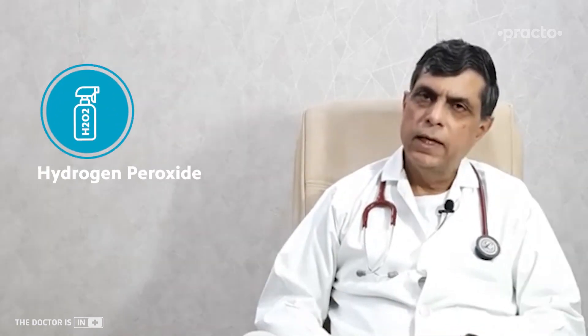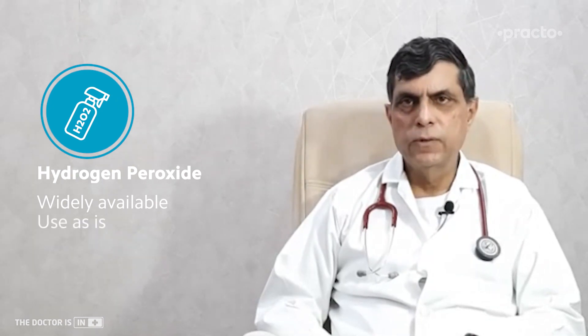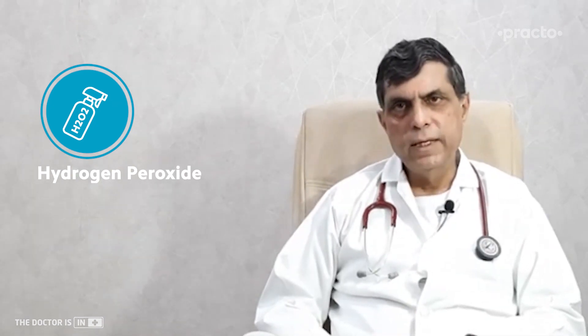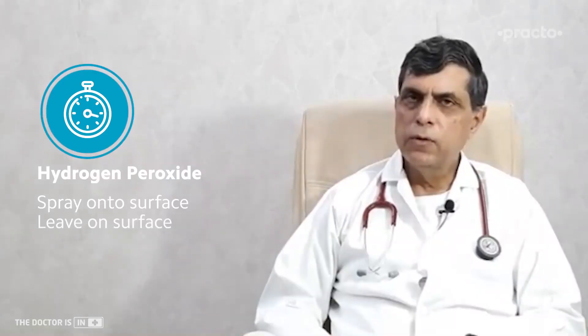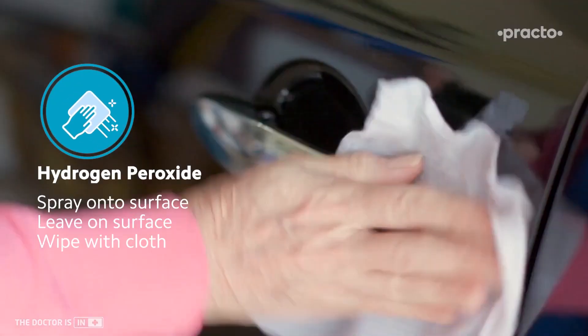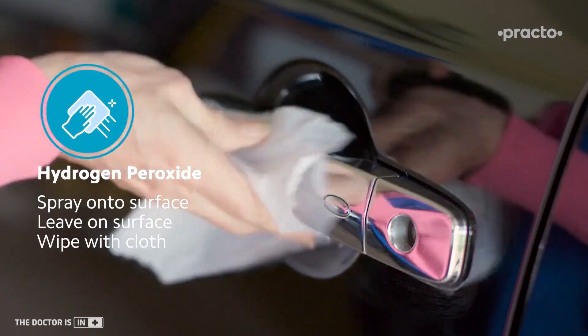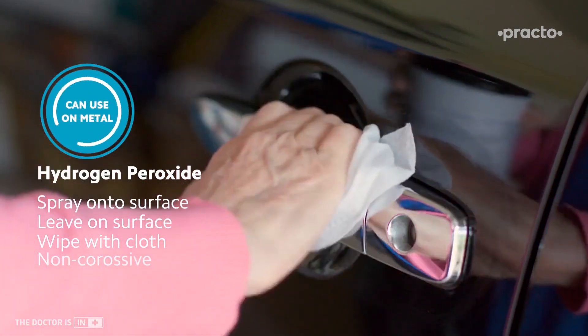Under these circumstances, we go to the next surface disinfectant, which is hydrogen peroxide. It is commercially bought and used in the concentration in which it comes to you. This can also be kept inside sprays, sprayed on surfaces, kept on contact for about a minute or two, and then wiped down with a cloth. It is not corrosive, so it can be used on metallic surfaces as well.